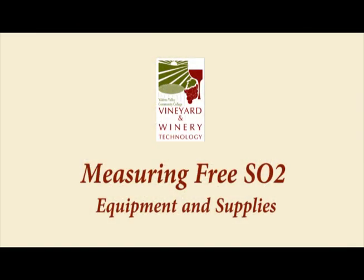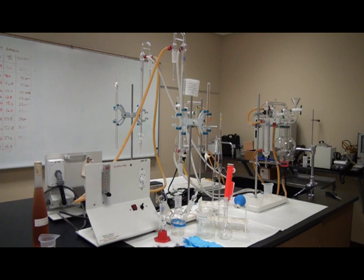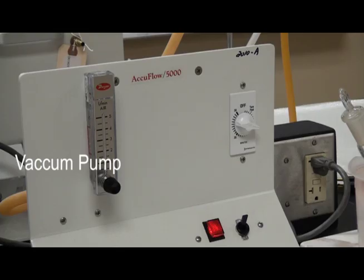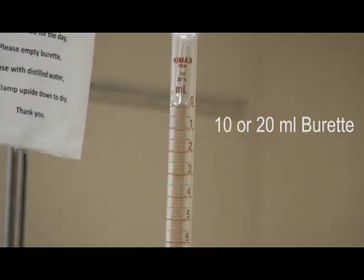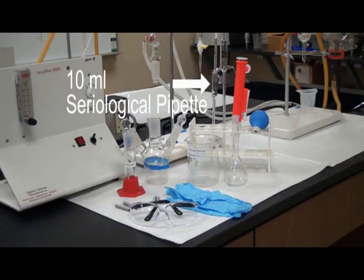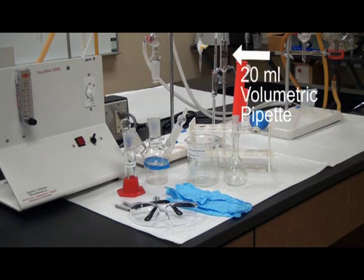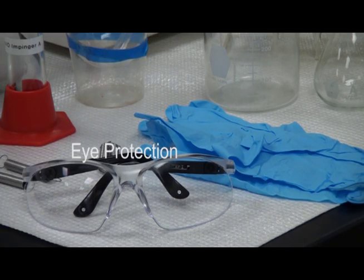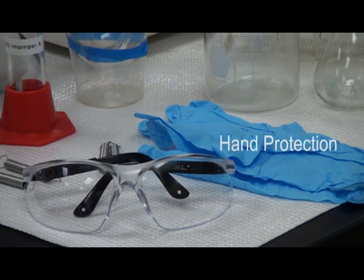Equipment and supplies needed for this analysis include aeration oxidation apparatus with the flow meter, a vacuum pump, a 10 ml burette, a 10 ml serological pipette, a 20 ml volumetric pipette, pipette safety bulb, safety glasses or goggles, and safety gloves.